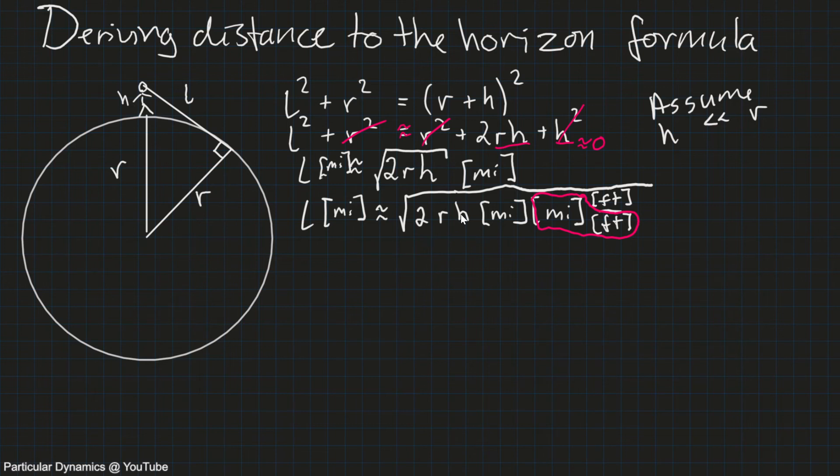And this number, or this unit we can now use together with the radius of the earth. We can express the radius in miles. And this number, this unit of foot, we can use together with the height of the observer.